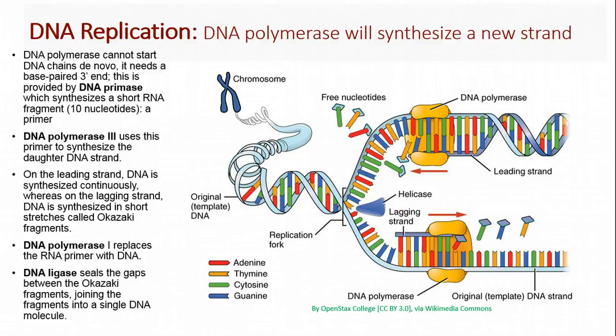So we have an enzyme called DNA polymerase. DNA polymerase reads the single strand of DNA, brings in the complementary strand, and synthesizes that new complementary daughter DNA strand. DNA polymerase can't start DNA chains de novo.